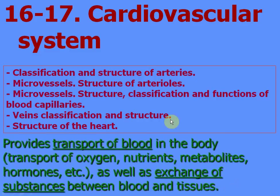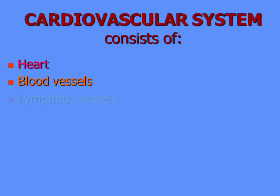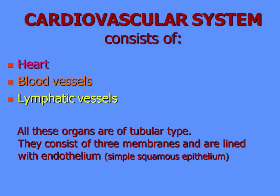Cardiovascular system. Main questions. The cardiovascular system provides transport of blood in the body. With blood are transported oxygen, nutrients, metabolites, hormones, and hundreds of other substances. The second function is exchange of substances between blood and tissues. It takes place in blood capillaries only. The cardiovascular system consists of heart, blood vessels, and lymphatic vessels. All these organs are of tubular type, consist of three membranes, and are lined with endothelium — simple squamous epithelium.